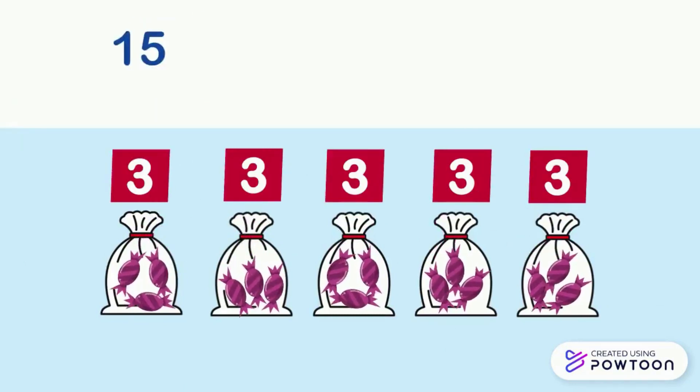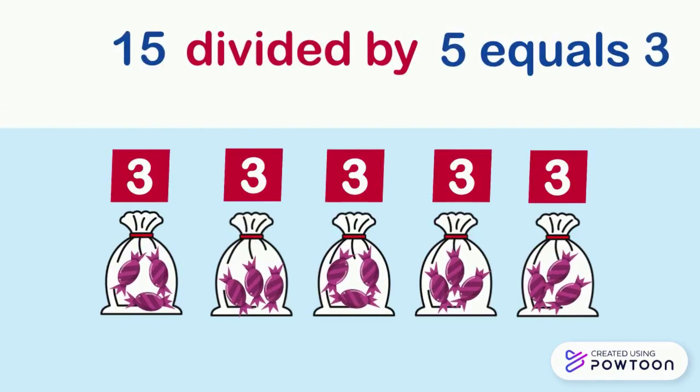So we say 15 divided by 5 equals 3. This means that we divided 15 into 5 groups, which gives us 3 in each group. To write a division problem, we use this sign to represent the division: 15 divided by 5 equals 3.